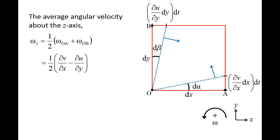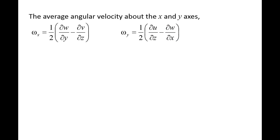So far, we have only examined one plane of motion. Velocity gradients can occur for the z component of the velocity in the x and y directions as well. Additionally, the x and y components of the velocity can vary in the z direction. If we examine the angular velocity about the x-axis and y-axis as well, we would obtain similar expressions. The average rotation rate about the x-axis, omega x, is one-half times the quantity partial w partial y minus partial v partial z. The average rotation rate about the y-axis, omega y, is one-half times the quantity partial u partial z minus partial w partial x.